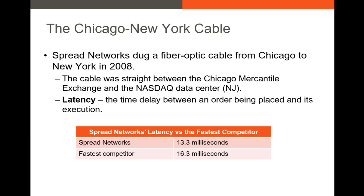In the case of Spread Networks, the benefit of this fiber optic cable built in essentially a straight line from New York to Chicago was that it reduced latency by about three milliseconds — three thousandths of a second. This meant orders got there faster and were more likely to be filled faster, which is why Spread Networks started charging millions of dollars for access to the line.